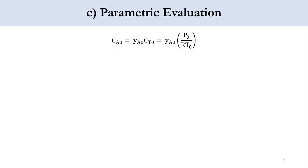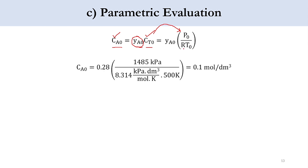For the third part — parametric evaluation — CA₀ = yA₀ · CT₀, where yA₀ is the mole fraction of A in the feed and CT₀ = P₀/(RT₀) from the ideal gas law. yA₀ = 0.28 (28% SO2 in feed), P₀ = 1485 kPa, R = 8.314 kPa·dm³/(mol·K), and T₀ = 500 K. This gives CA₀ = 0.1 mol/dm³ as the initial concentration of the limiting reactant.